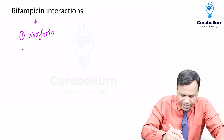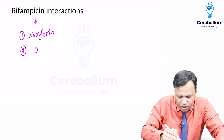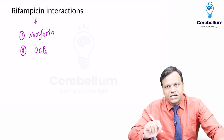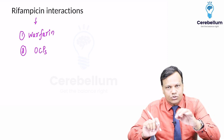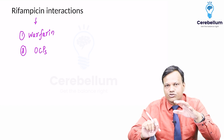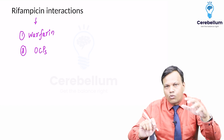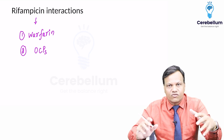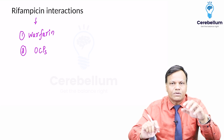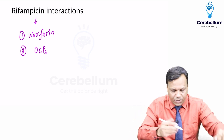The second important interaction is with oral contraceptive pills. Rifampicin increases the metabolism of estrogen, so when estrogen metabolism is increased, OCP failure can occur. Therefore, females should use some other mode of contraception.